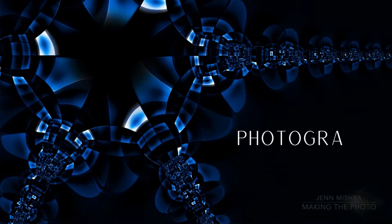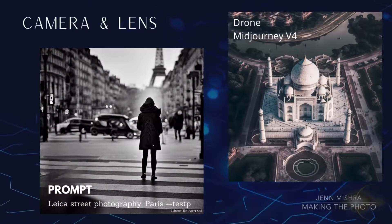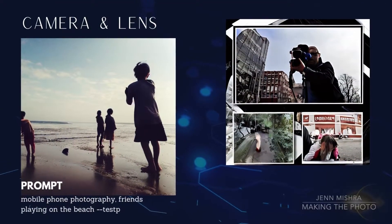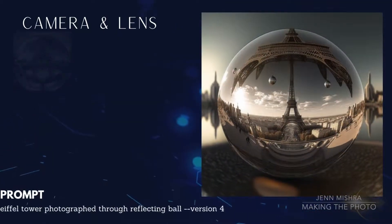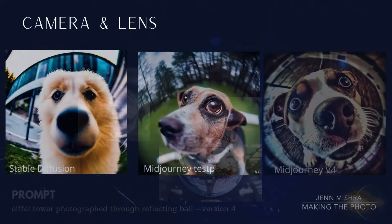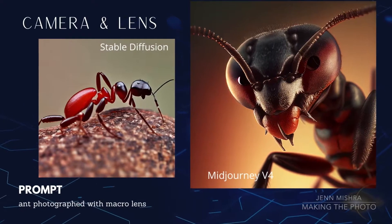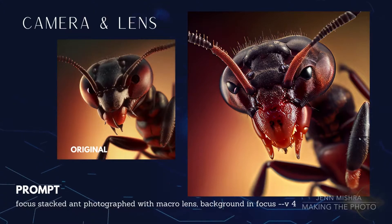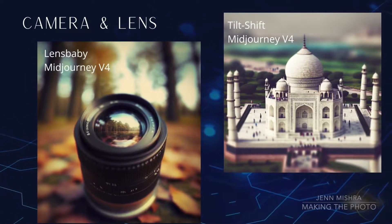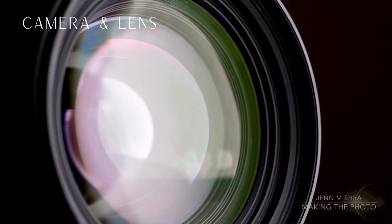If you have a photography background, prompt for specific cameras and other photographic equipment. You can ask for drone photos or images from a specific type of camera, like a Canon, Nikon, or a Leica. You can ask for infrared photography, or Polaroid shots, or mobile phone photography. Midjourney version 4 even knows how to make a photo shot through a reflecting ball — it's not exactly right, but it's a pretty cool effect. You can prompt for specific types of lenses, like a fisheye or a macro. If you're getting too much blur in a macro photo, ask the AI to make the image in sharp focus or focus stacked. You can even try asking for specific lenses from Canon or Zeiss, or specialty lenses like a Lensbaby. The AI may or may not know the specific lens, but asking for specifics emphasizes that you want a photograph.